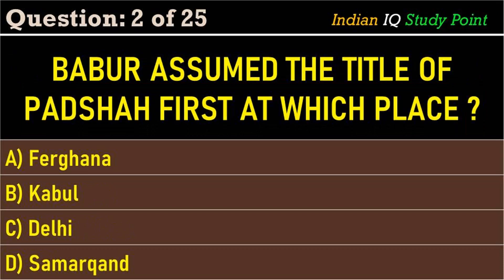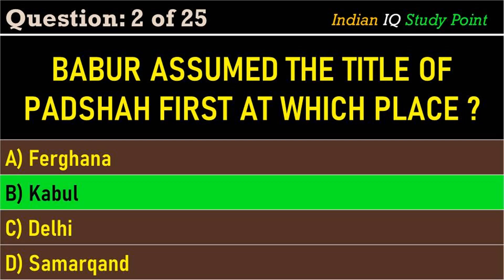Coming to the next question: Babar assumed the title of Patshah first at which place? Option A. Ferghana, B. Kabul, C. Delhi, D. Samarkand. And the correct answer is Option B. Kabul.